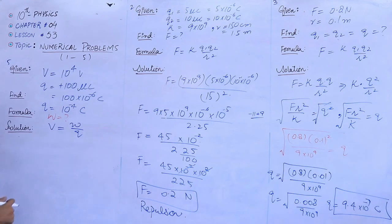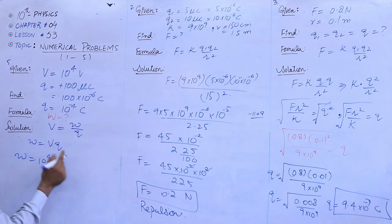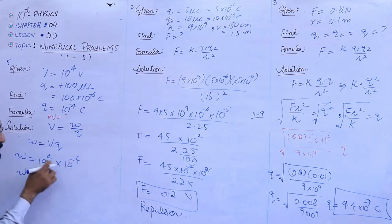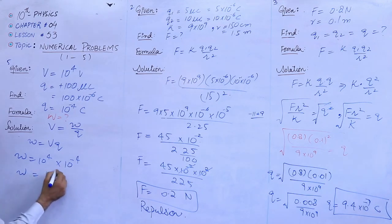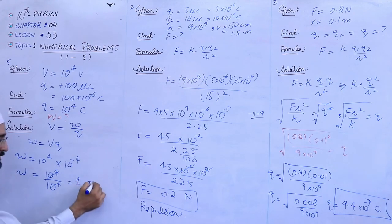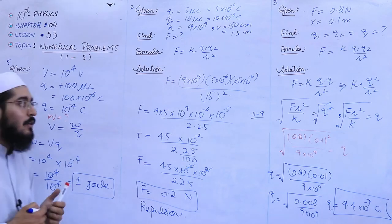To separate W from the formula, W equals V multiplied by Q. Substituting values: V is 10 raised to power 4, and charge is 10 raised to power minus 4. After calculation, 10 raised to power 4 and 10 raised to power minus 4 cancel each other, giving the answer of 1. The unit for work done is Joule. Hence this is the final answer for the fifth numerical of this lesson.